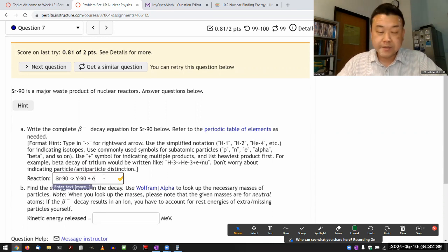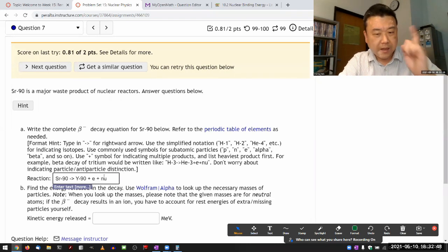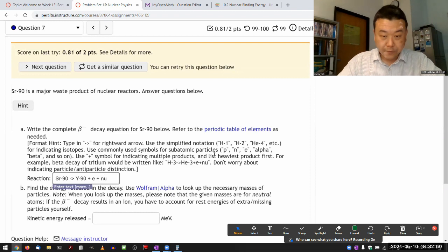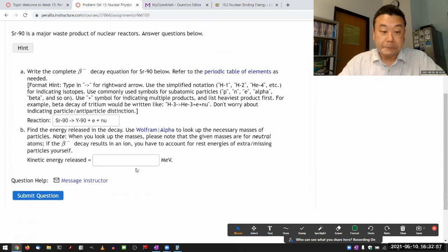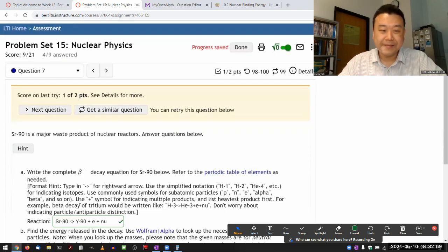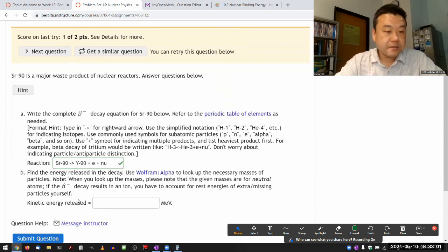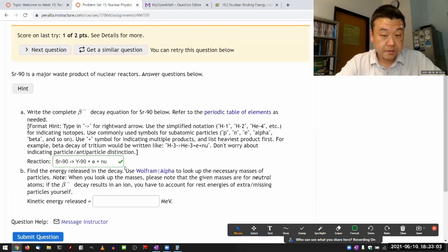It has to do with electron number conservation that we'll actually talk about in Chapter 11 overview today. Okay. So electron has electron number of one. I need an anti-neutrino to carry away the electron number of minus one. So it should have electron anti-neutrino. But for now, it says don't worry about indicating particle and particle distinction. So I won't. I'll just put in plus nu. So that should now be right. Okay. So it says to find the energy released in the decay.